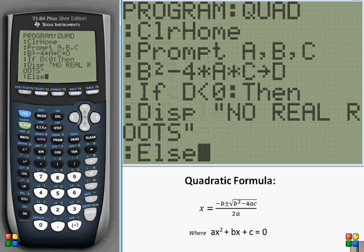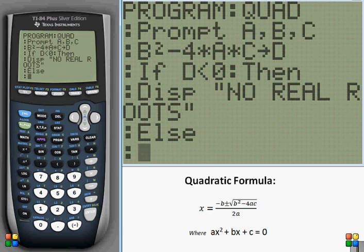Else, if the determinant is greater or equal to zero, then we will do the next part, which is solving for the rest of the equation. And we're going to store it in two variables, x and y, and then we're going to display them together.